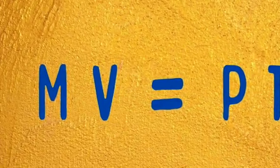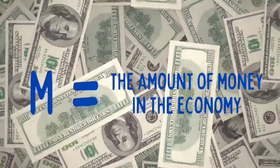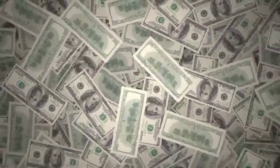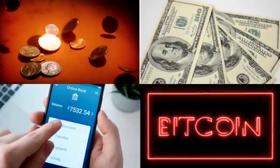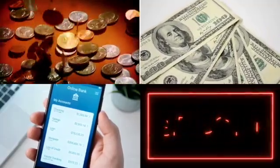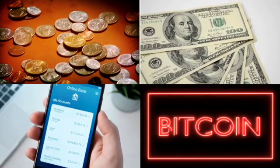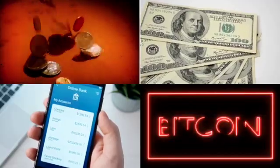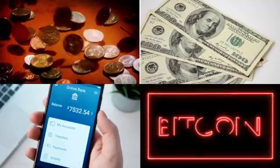Let's look at the MV part of the quantity theory. M is simply the amount of money in the economy at any particular point in time. While defining money can be complex, for our purposes we'll assume money is the total of all cash and bank deposits — all notes and coins, as well as money held in banks that is instantly available for people to spend.